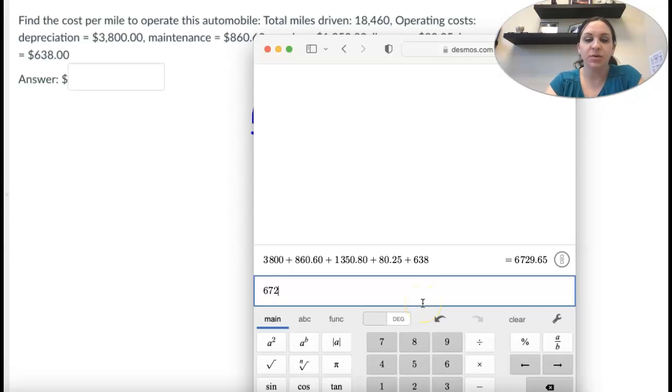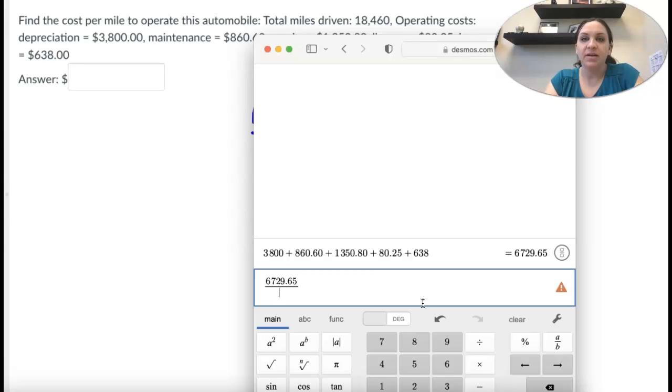So $6,729.65, and we're going to divide that by the miles driven, so 18,460. So the cost per mile to operate is 0.364.